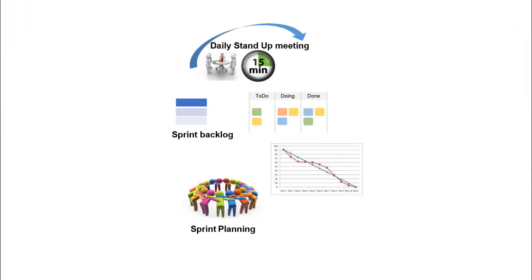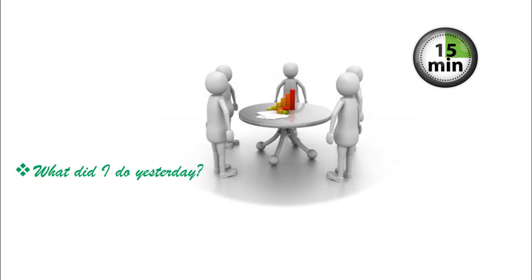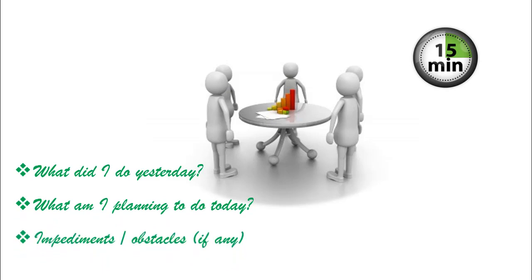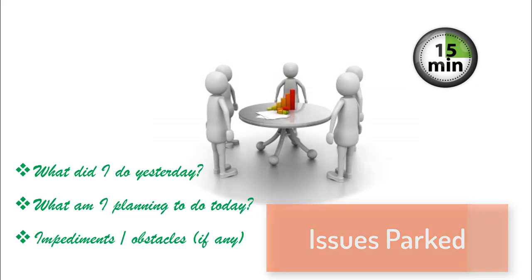Now the question is when and how the team is updated when such things are discovered. The solution is every day the team members meet for around 15 minutes. The idea is to update each other about whatever is happening in the project. In this meeting, every team member speaks on three points: what did I do yesterday, what am I planning to do today, and impediments if any. The minutes of meeting are not noted. The obstacles, if any, are parked and not solved in this meeting. The scrum master may call for another meeting, calling only the required people who can solve the problem.